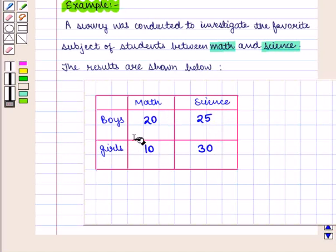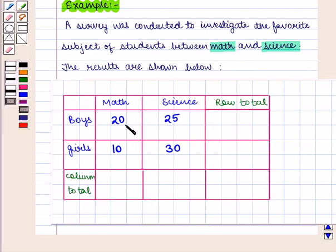Now this table can be extended to display the marginal totals or marginals. The total of the marginal totals is the grand total. The row total for boys will be 45 and for girls will be 40. The column total for the subject math will be 30 and for science will be 55. The grand total will be 45 plus 40, that is 85, or we can calculate it as 30 plus 55, which is also 85.